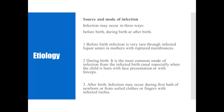So what is the etiology? What is the source and mode of infection? Infection may occur in three ways: before birth, during birth, or after birth. Before birth, infection is very rare — through infected liquor and amniotic fluid in mothers with ruptured membranes. Sometimes in cases of premature rupture of membranes or pre-term premature rupture of membranes, that is when the infant can get infected before birth.